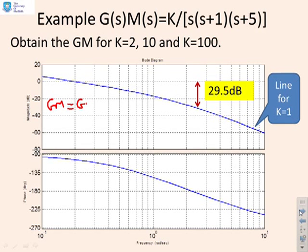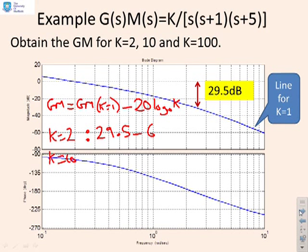I simply say the gain margin is what it was for K equals 1 minus 20 log to the base 10 of K. So if I do K equals 2, then what you're going to get is 29.5 minus 6. If I do K equals 10, you're going to get 29.5 minus 20. And if I do K equals 100, I'm going to get 29.5 minus 40.